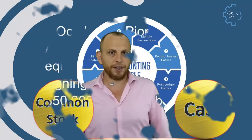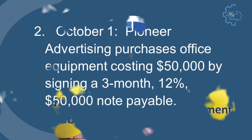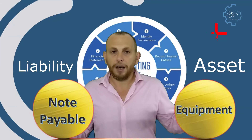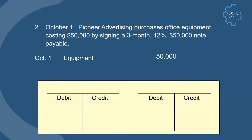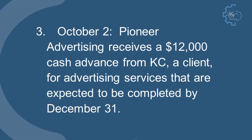Second transaction: on October 1, Pioneer Advertising purchases office equipment costing $50,000 by signing a three-month, 12%, $50,000 note payable. We have equipment and note payable. Equipment is an asset, note payable is a liability. Equipment increases, note payable increases. So equipment will be debited and note payable will be credited. The posting goes to both accounts: equipment and note payable.